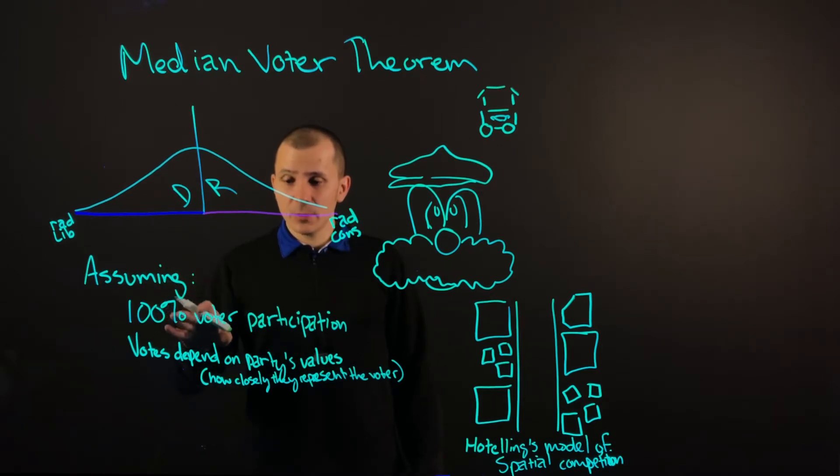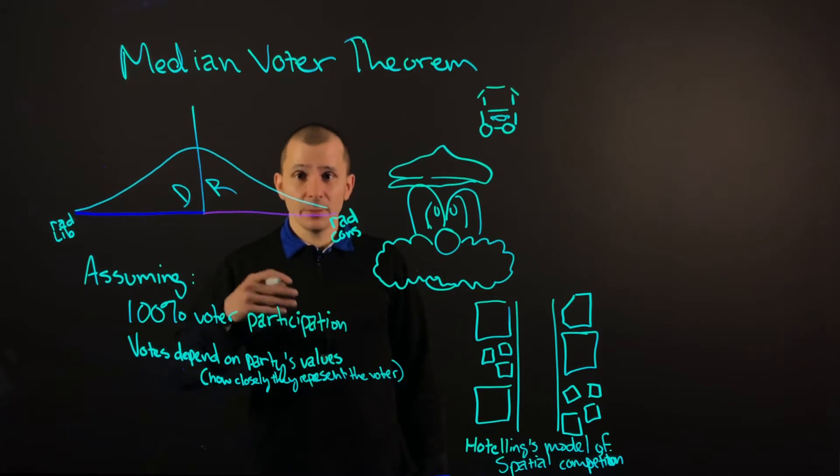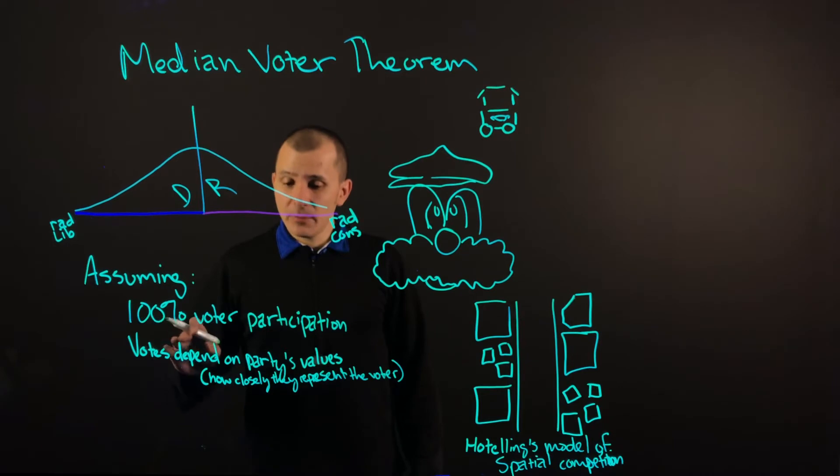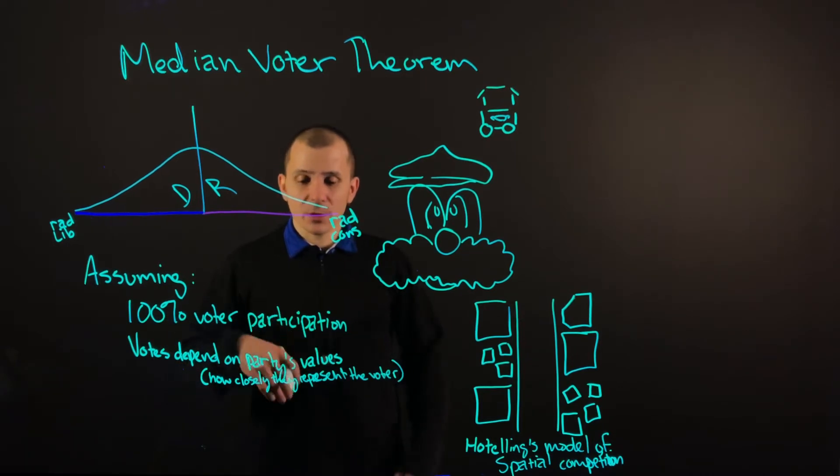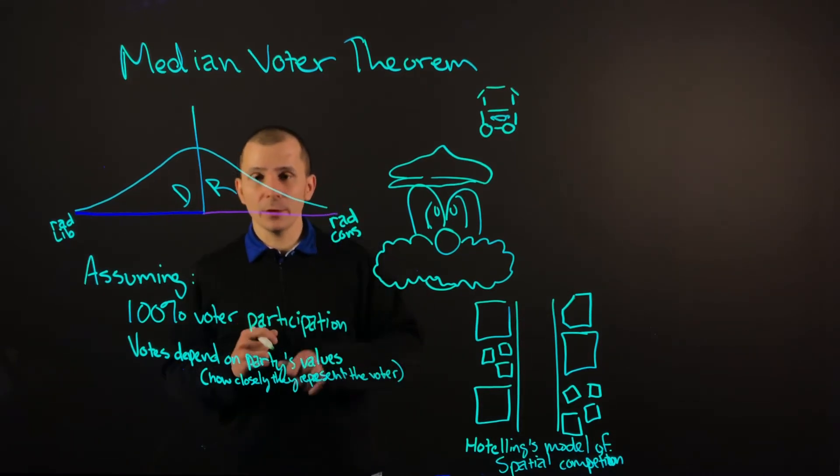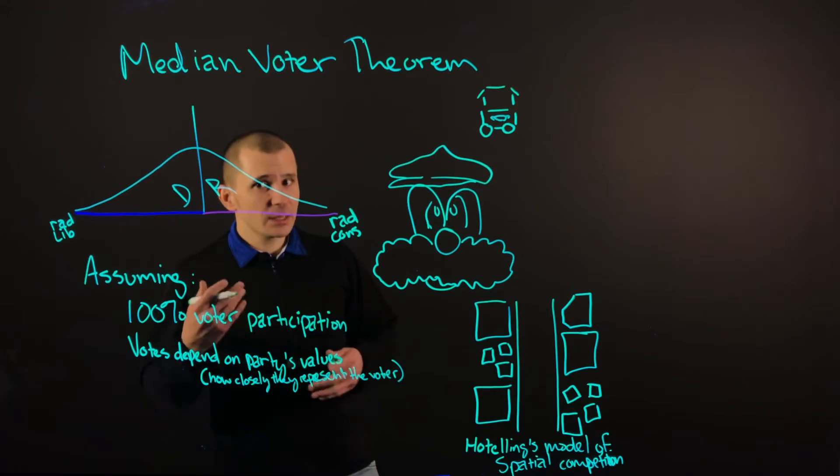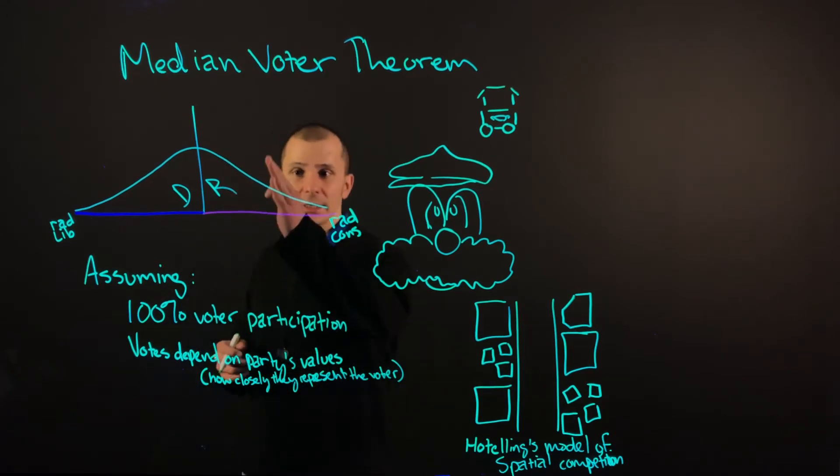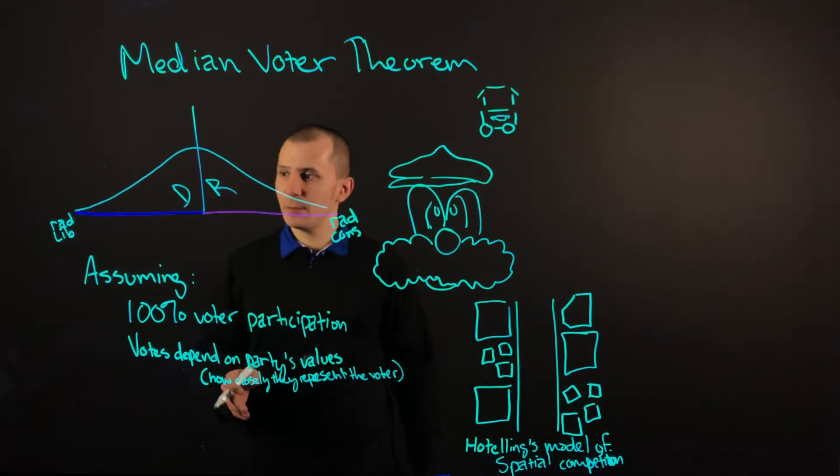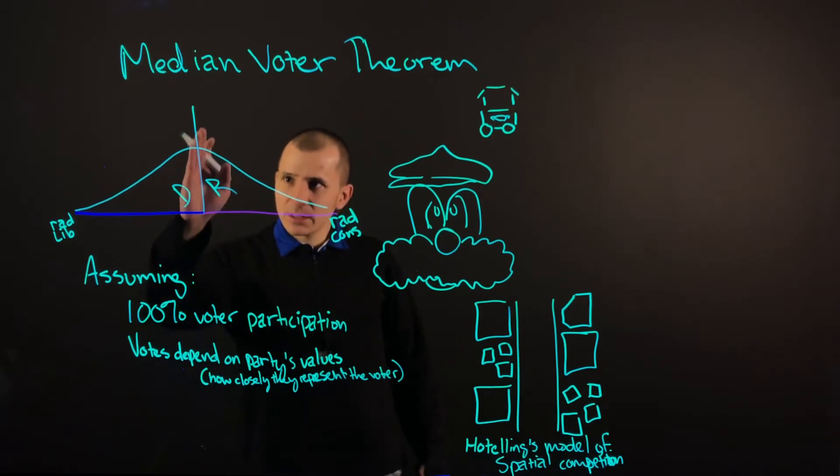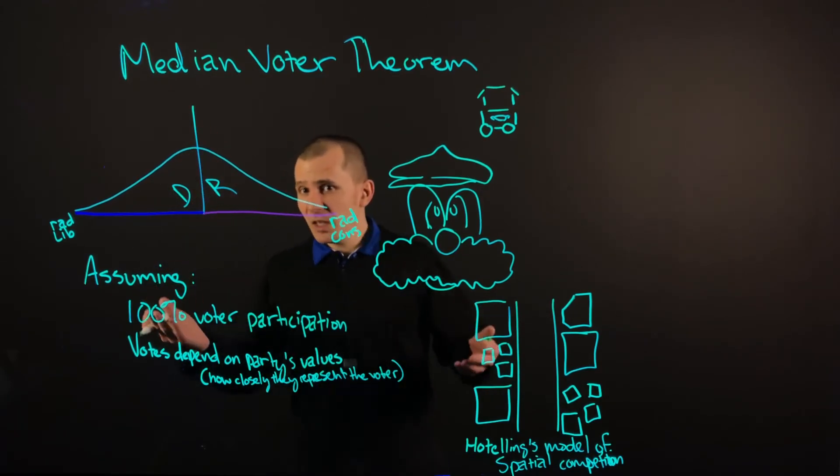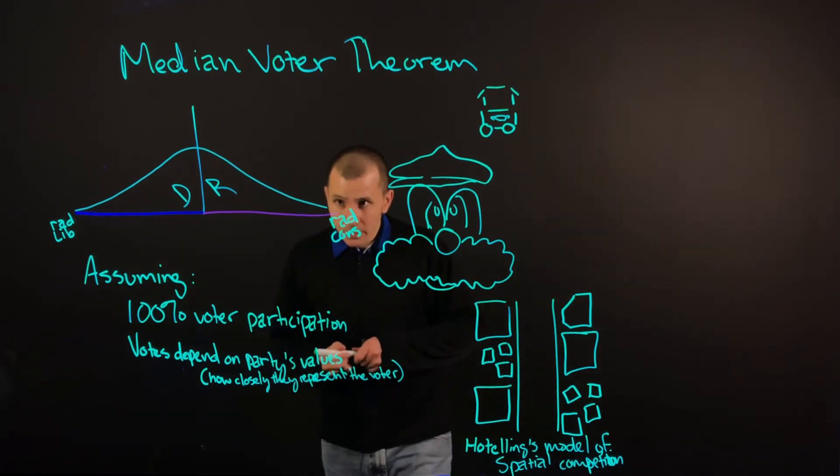But one thing that's very important to note about this theorem is that it needs to assume that 100% of voters are going to participate in the election, depending on how you calculate this through whatever statistical means that you will. And the votes depend on the party's values or how closely they represent the voter. Now sometimes it's not the case—sometimes somebody is somewhere over here on the conservative side, but they end up voting Democrat because there's something that they really like from them. It just depends.